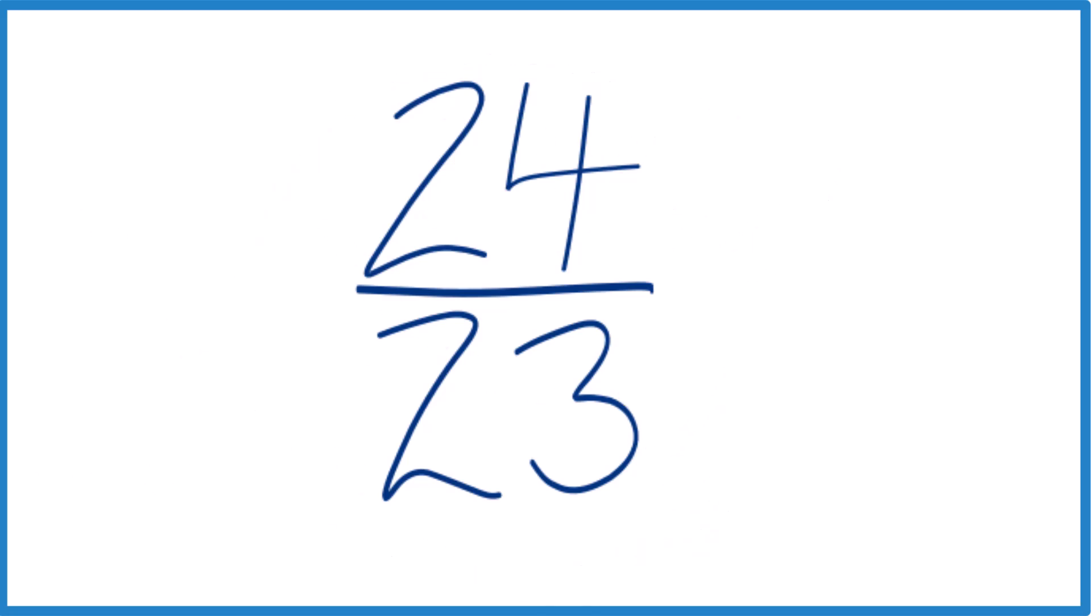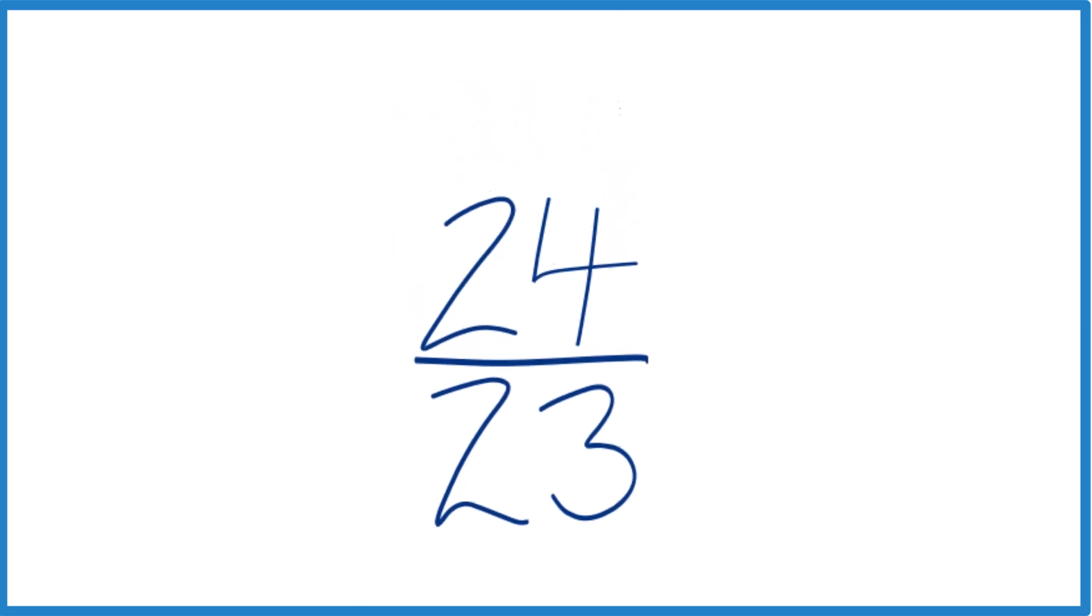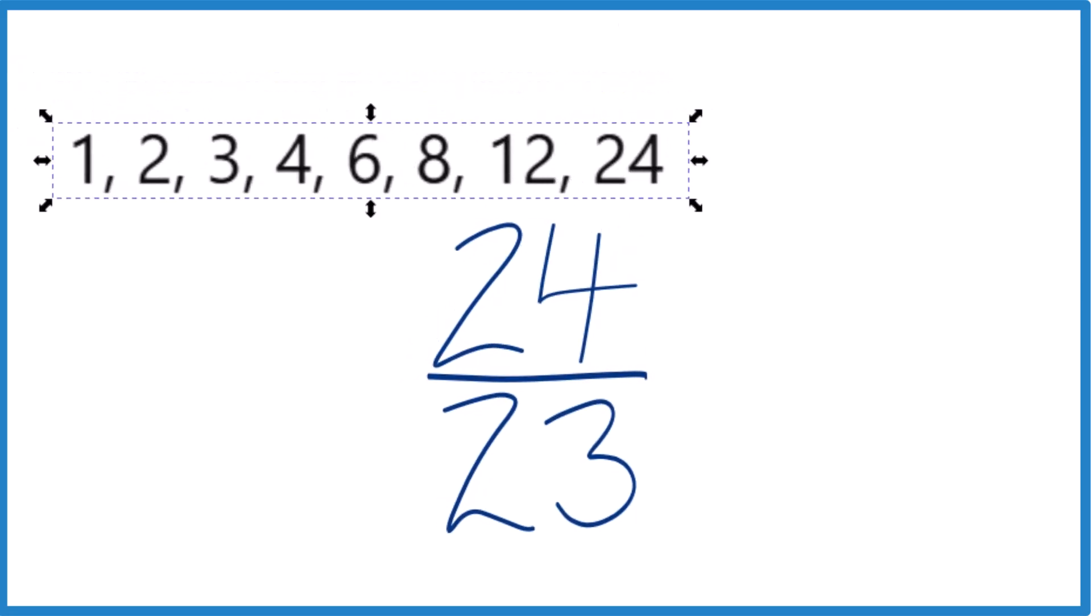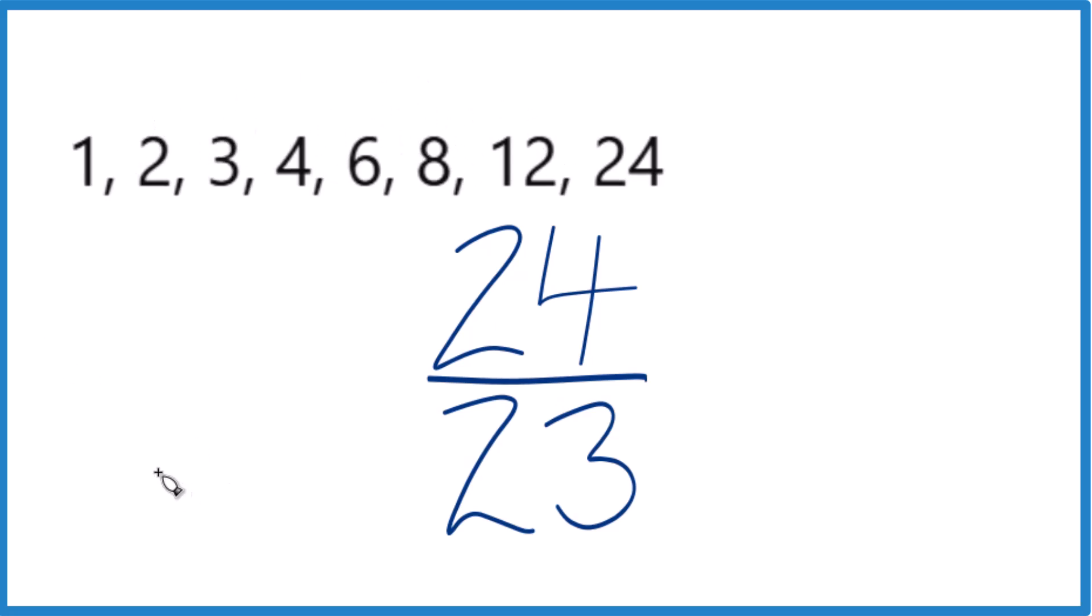So we could write the factors of 24 and 23. For 24, we have 1 times 24, 2 times 12, 3 times 8, and 4 times 6. For 23, the only factors are 1 times 23. That's it.